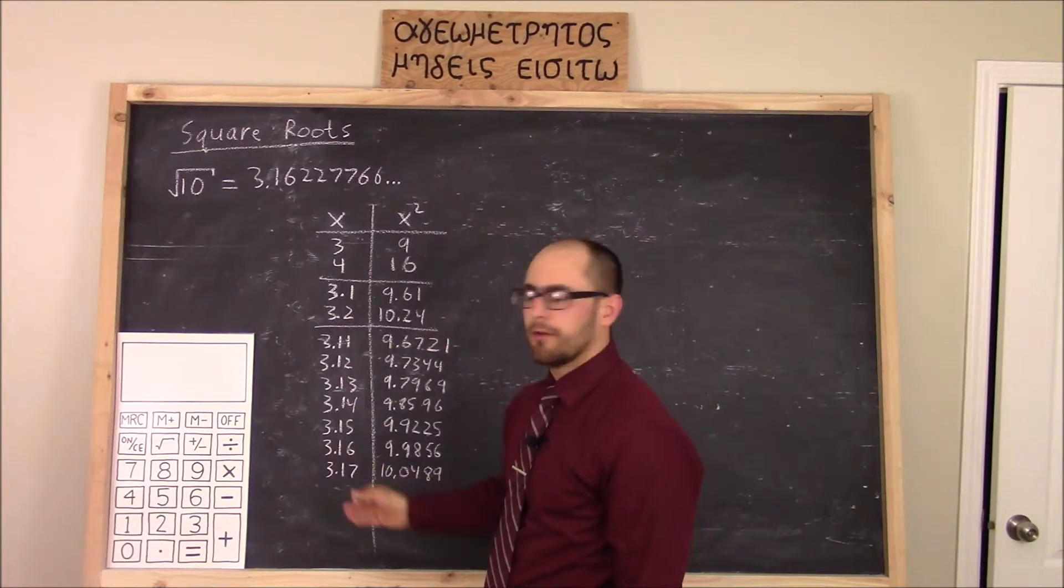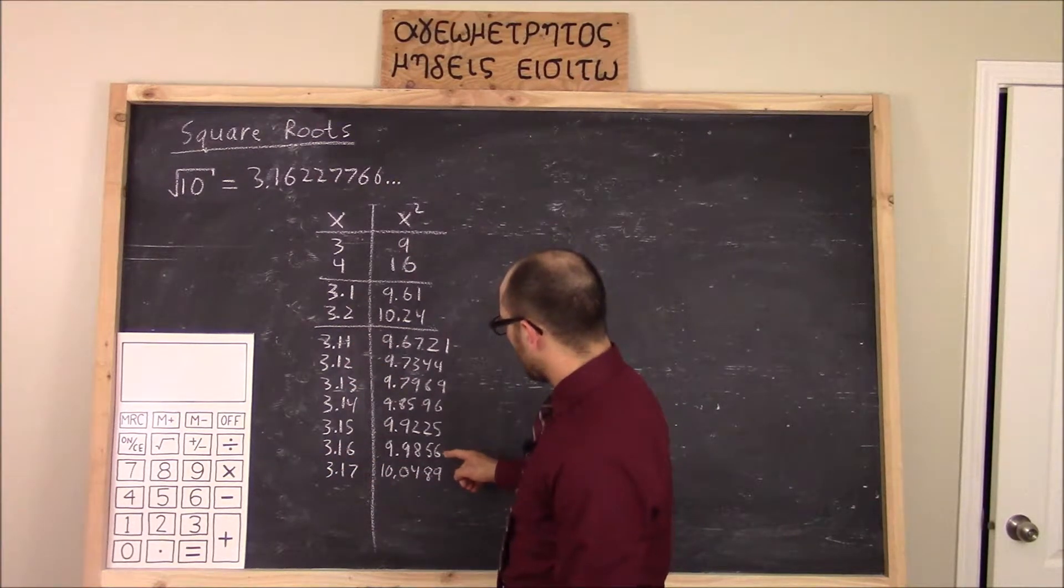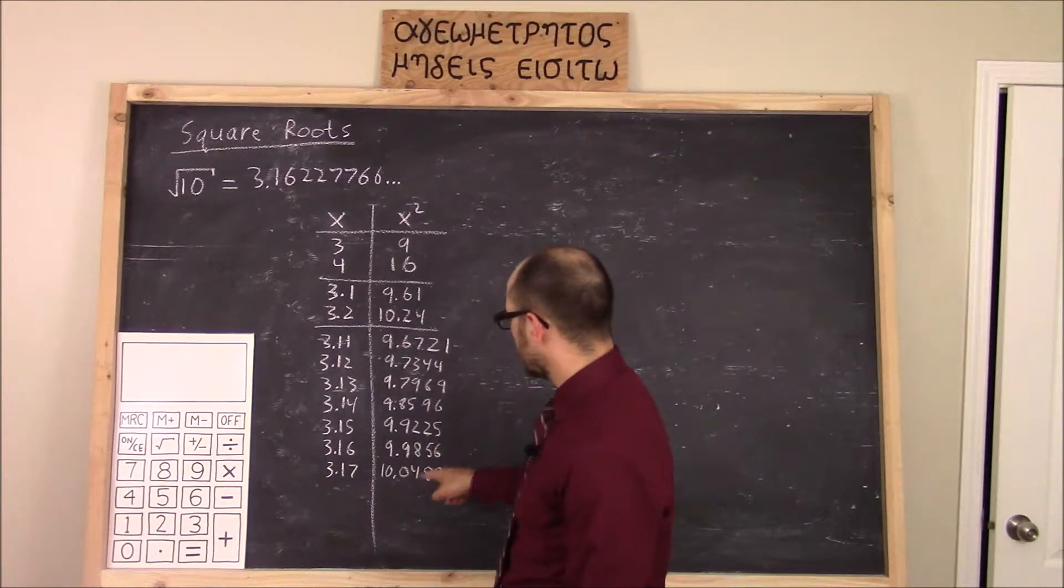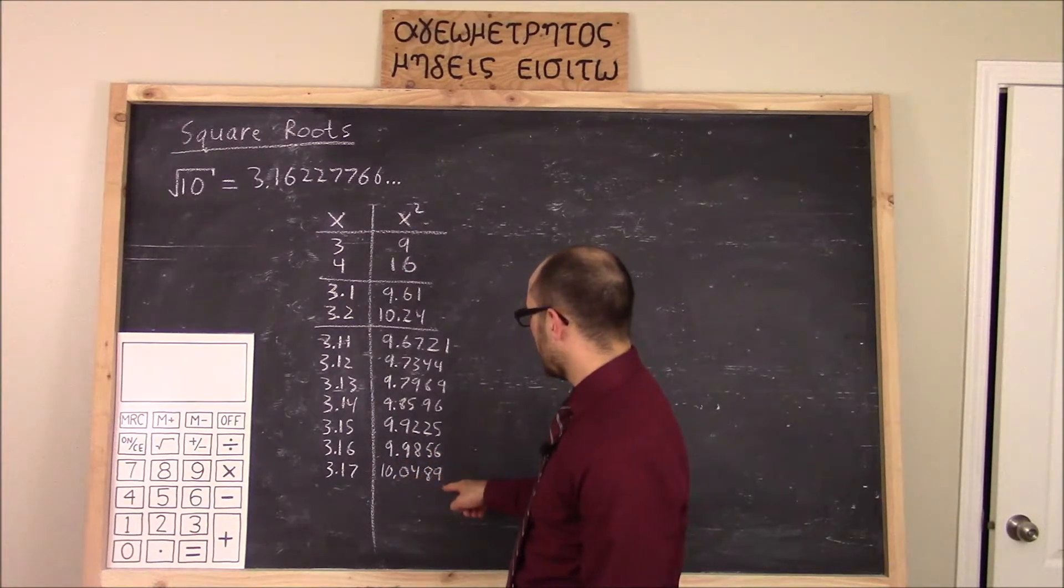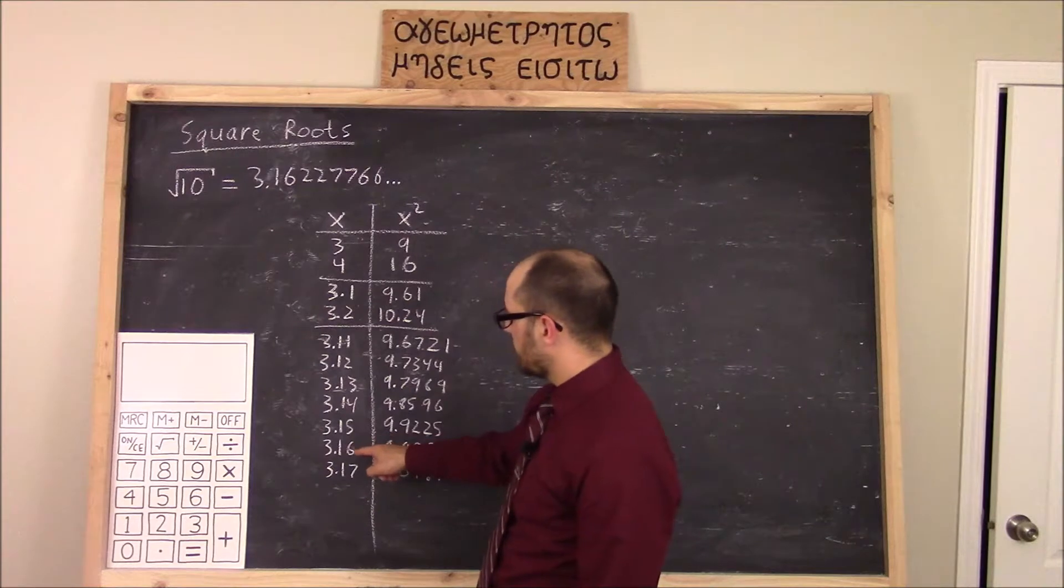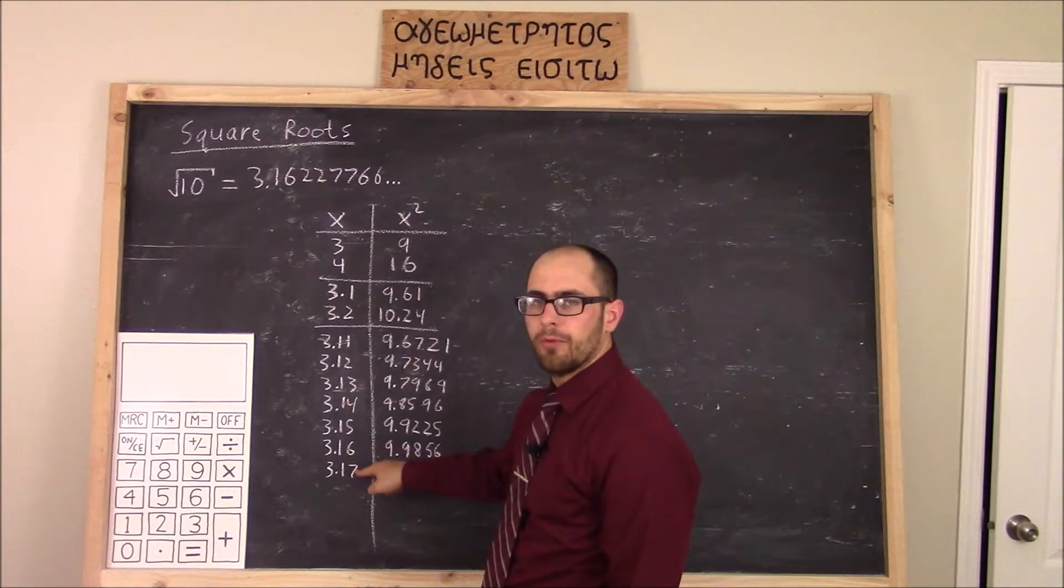We can continue the pattern to find that 10 lies somewhere between 9.9856 and 10.0489. So that means x is somewhere between 3.16 and 3.17.